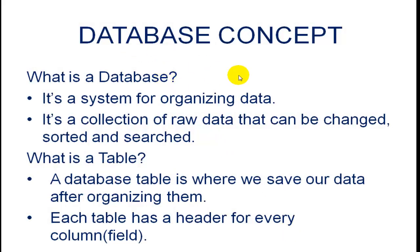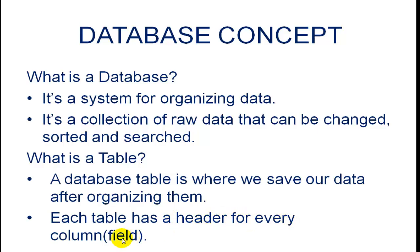Database concept: What is a database? It is a system for organizing data. It is a collection of raw data that can be changed, sorted, and searched. What is a table? A database table is where we save our data after organizing it. Each table has a header for every column field.